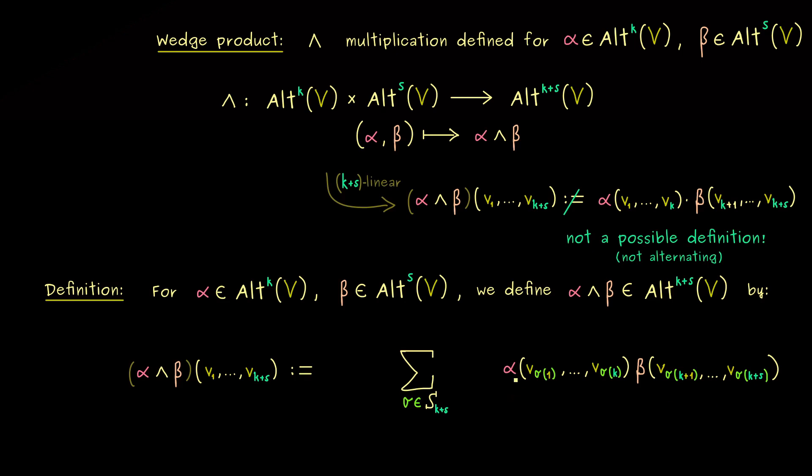So now with the sum here, we have included every possible order of the k+s vectors inside alpha and beta. And therefore, you could use the alternating fact of alpha and beta to reorder the inputs as you want. And therefore, we immediately see also the sign of the permutation plays a role here. In other words, if we have an odd permutation, we have to cancel that with a minus sign here. Okay, and now we have it. Now you should see that this big sum here gives us an alternating k+s form. This is guaranteed because we go through all possible permutations anyway. So it's completely similar to the Leibniz formula for determinants.